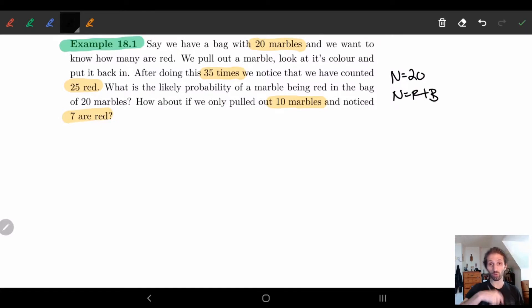I know I pull 35 times. So I know little n is 35. We'll let little r be 25 because that's what we calculated. So what this means is my p hat is 25 over 35.